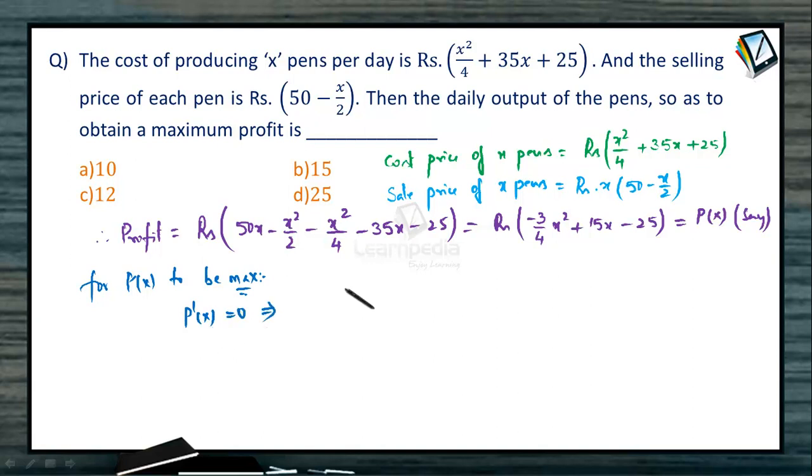What is P'(x)? That is the derivative of this function: -3/4 × 2x + 15 should be equal to 0, which in turn gives x must be equal to 10.